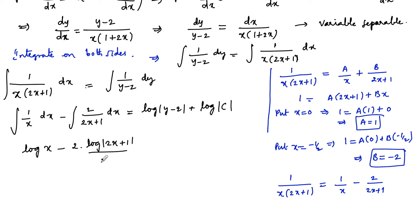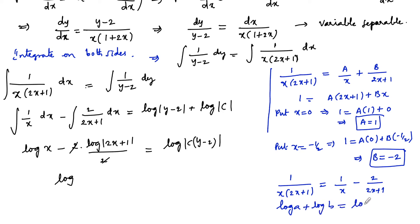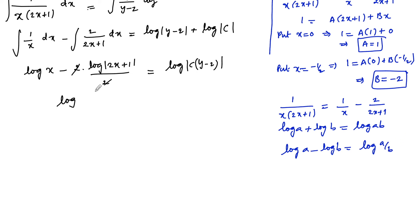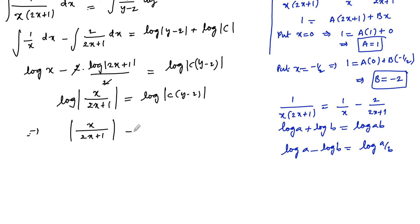Using logarithm properties — log a plus log b equals log ab, and log a minus log b equals log a/b — the right side becomes log of x upon 2x plus 1. So we get log mod of x upon 2x plus 1 equals log c times y minus 2, which means x upon 2x plus 1 equals c times y minus 2 as the general solution.